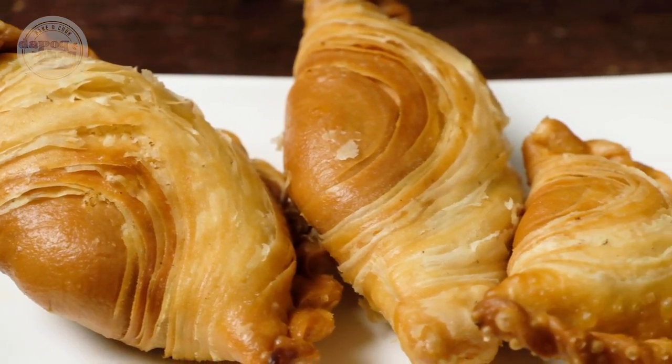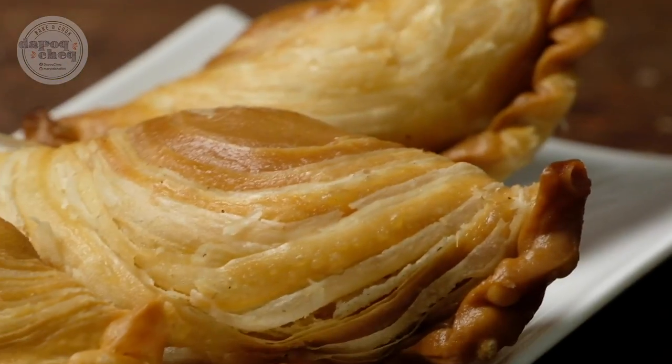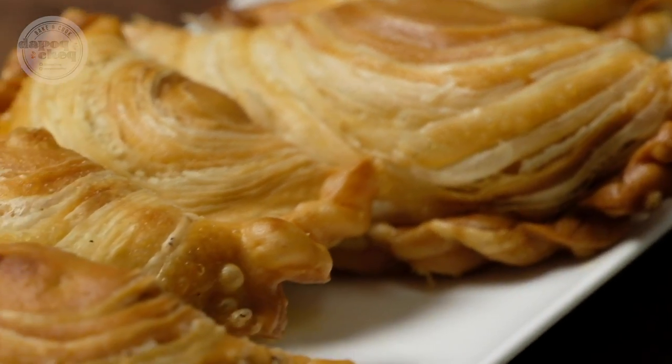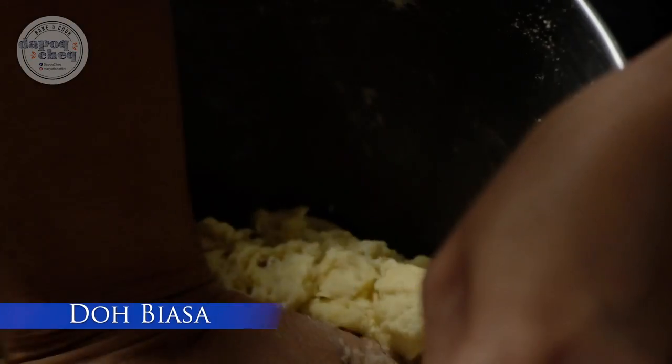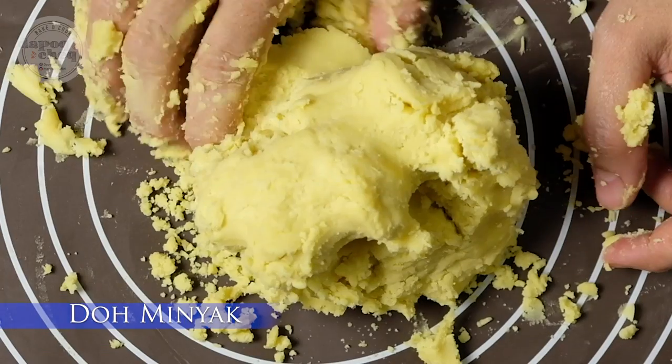Assalamualaikum. Hari ni Kak T nak tunjuk cara nak buat karipap pusing. Untuk nak buat karipap pusing ni, dia pakai dua dough. Satu panggil dough biasa, satu lagi panggil dough minyak.